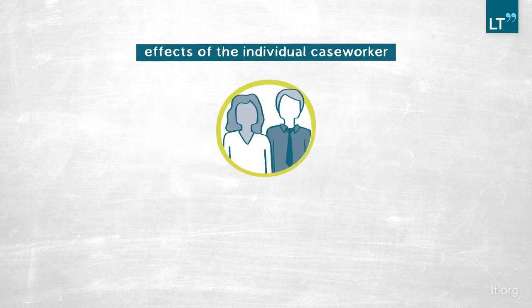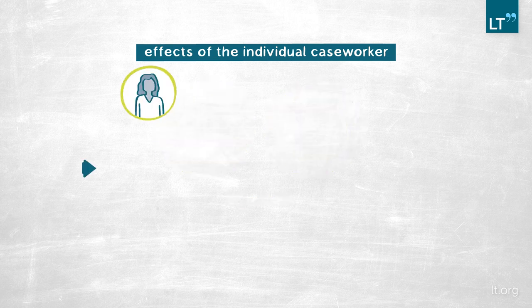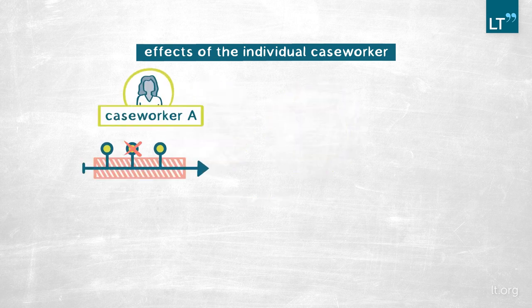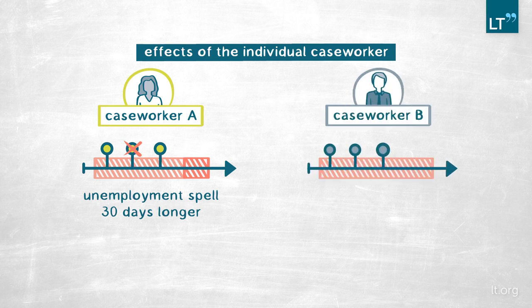The second question was how important is the individual caseworker, and my results show they are quite important, because the effect of absences is very heterogeneous. If some caseworkers are absent, this prolongs the duration of unemployment by even more than 12 days — up to about 30 days on average. But if certain other caseworkers are absent, we find no effect on the duration of unemployment.